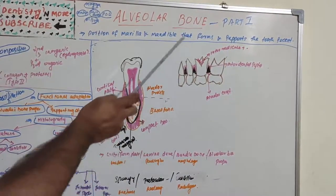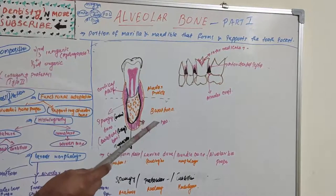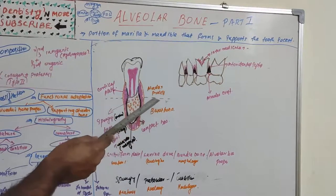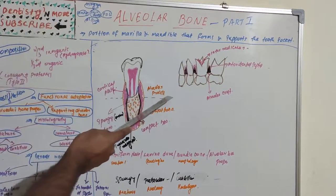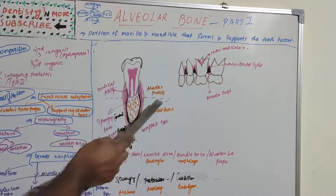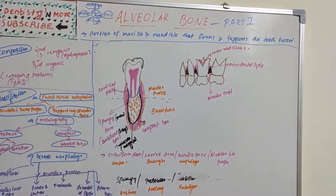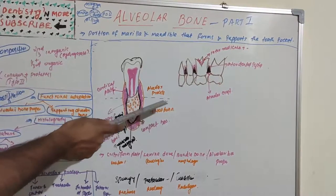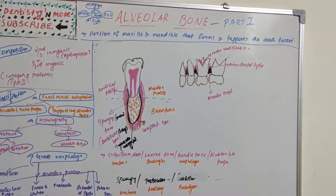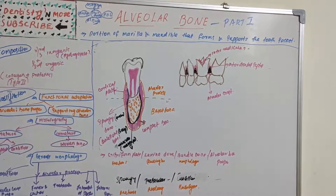The interradicular septum is the bone between the roots of multi-rooted teeth. Basal bone is the osseous tissue of the mandible and maxilla except for the alveolar process — it is the part of the mandible and maxilla without the alveolar process. Anatomically, there is no distinct boundary between the alveolar process and basal bone; it is an arbitrary line.